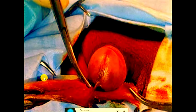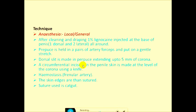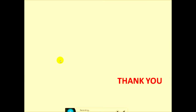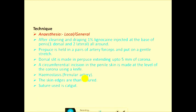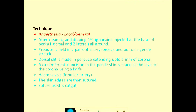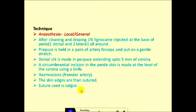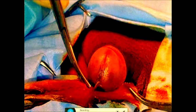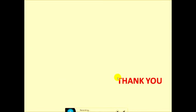A dorsal slit is made in the prepuce extending up to five millimeters proximal to the corona. Then a circumferential incision in the penile skin is made at the level of the corona using a knife or scissors, removing the skin. Hemostasis is achieved; the frenular artery is important and must be tied to prevent bleeding. The skin edges are then sutured using catgut, as an absorbable suture is required for skin closure.